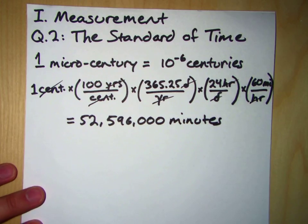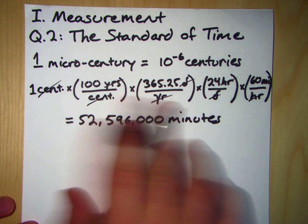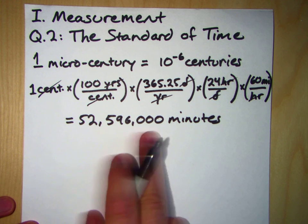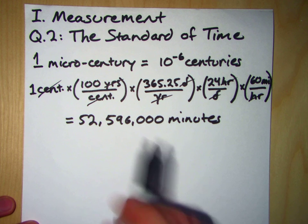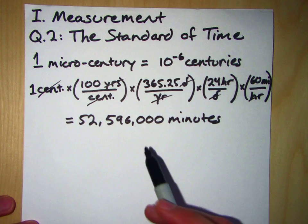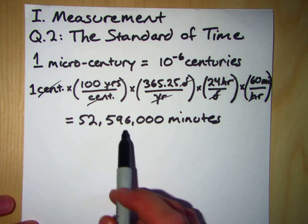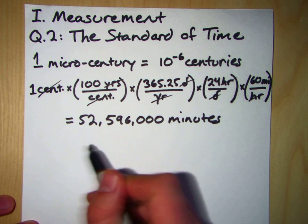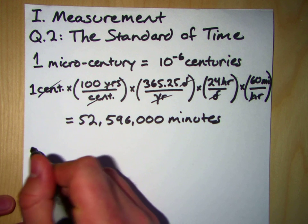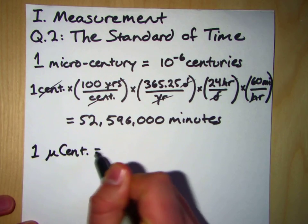That's a lot of minutes. How many minutes are in a micro-century? Well, if a micro-century is just, this is 52,596,000 minutes per century. If we want to know how many minutes there are in a micro-century, since a micro-century is just one millionth of a century, then we should be able to take this number, divide it by a million, or multiply it by 10 to the minus sixth,